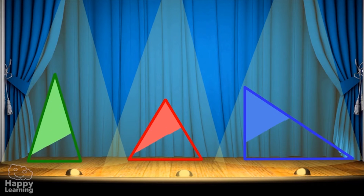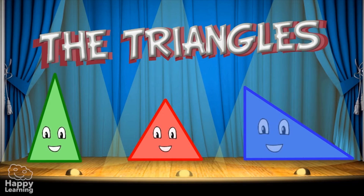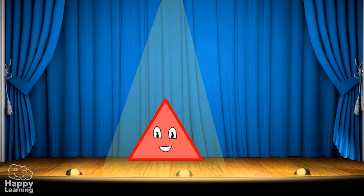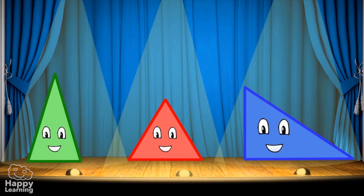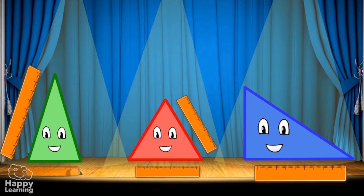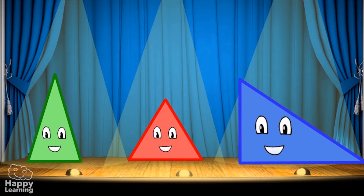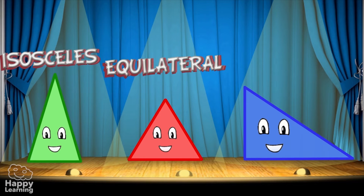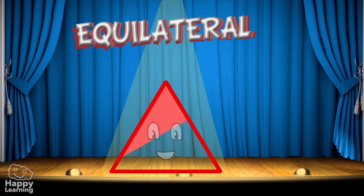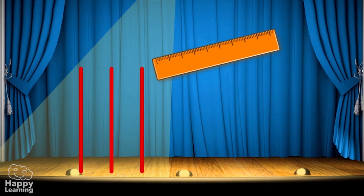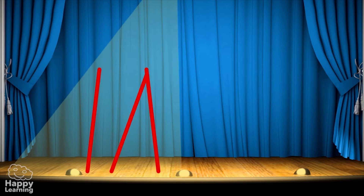Today we're going to learn about triangles. Triangles are polygons with three sides — one, two, three. But there are different kinds of triangles, and we classify them by the length of their sides. Using this classification, we get three types of triangles: isosceles, equilateral, and scalene.